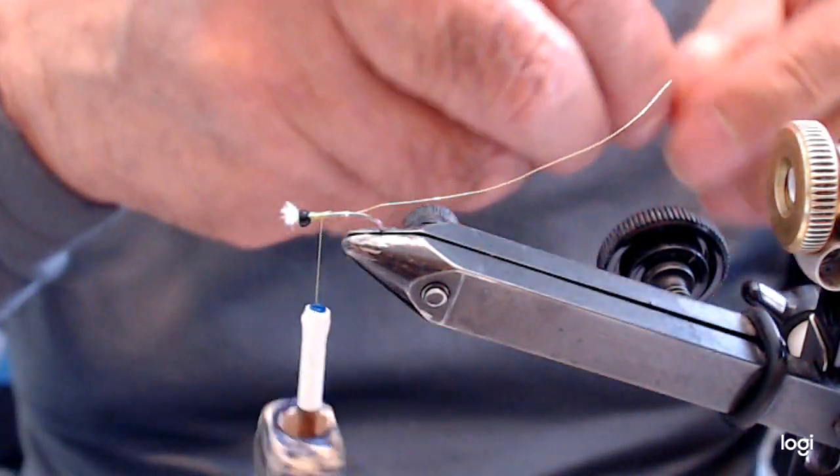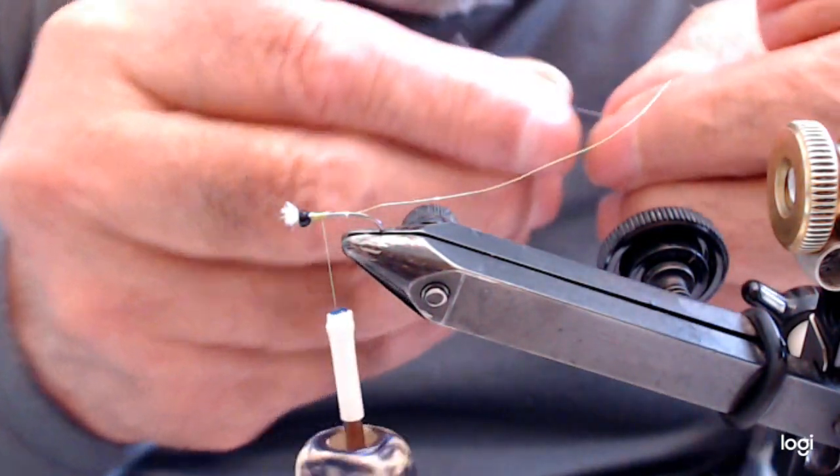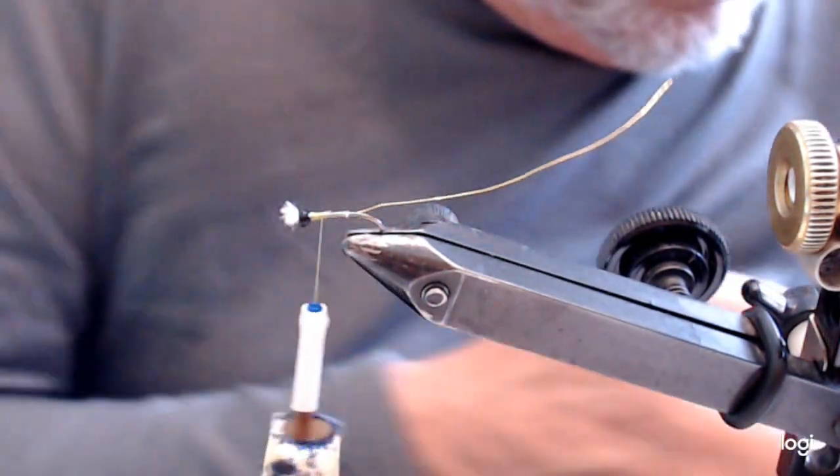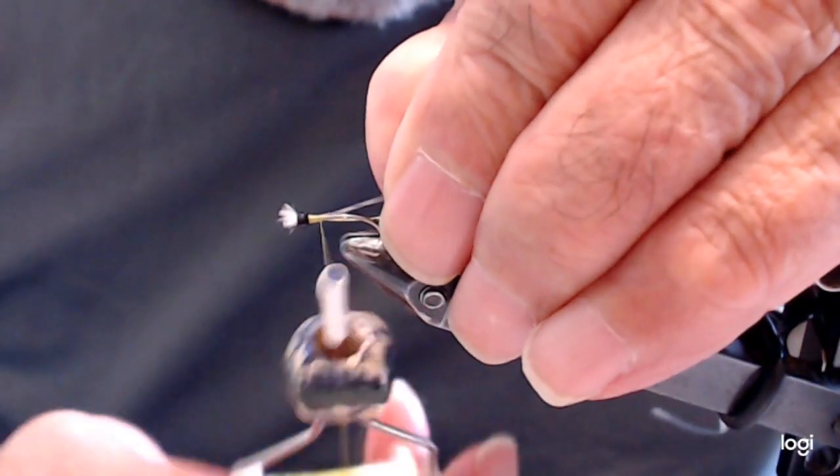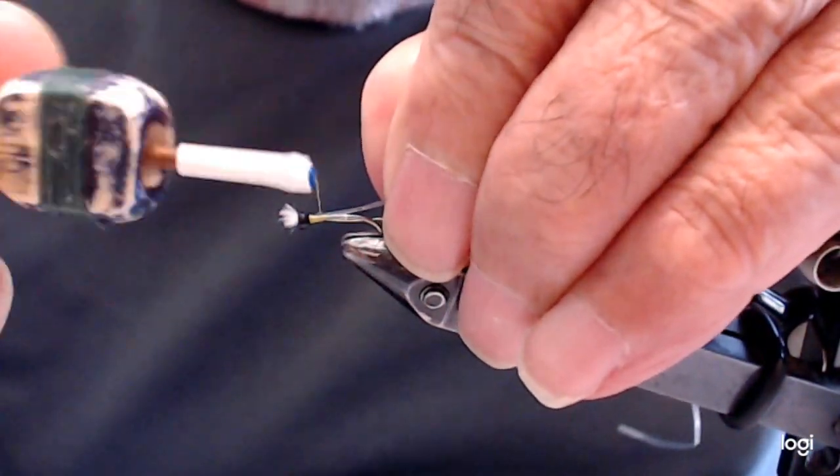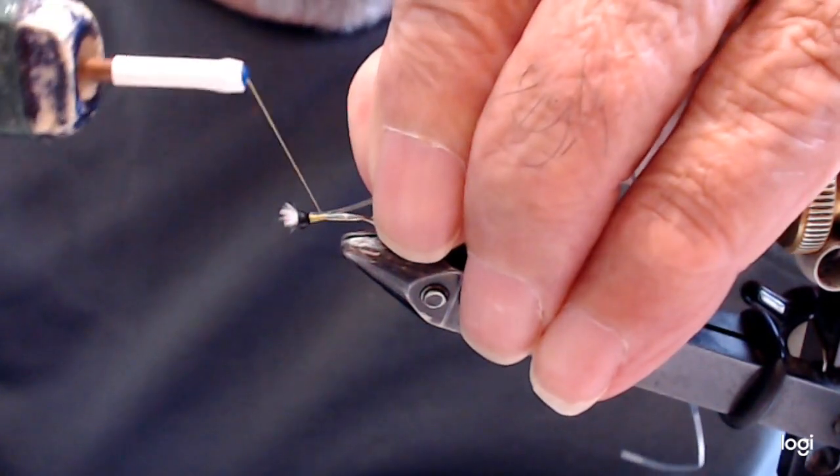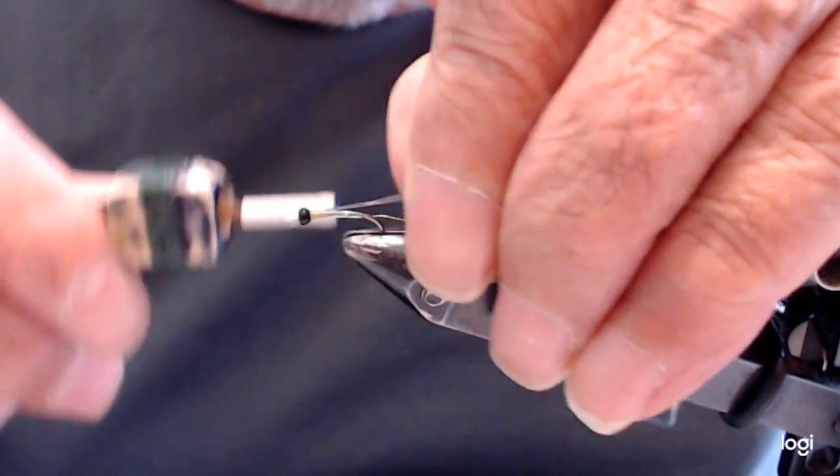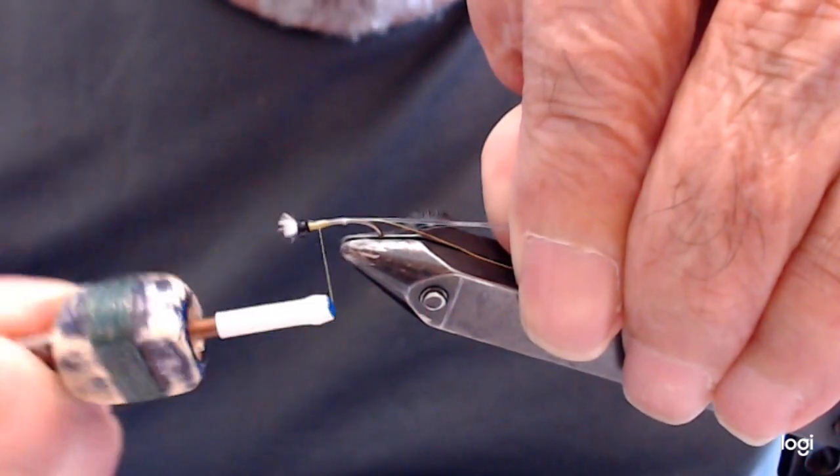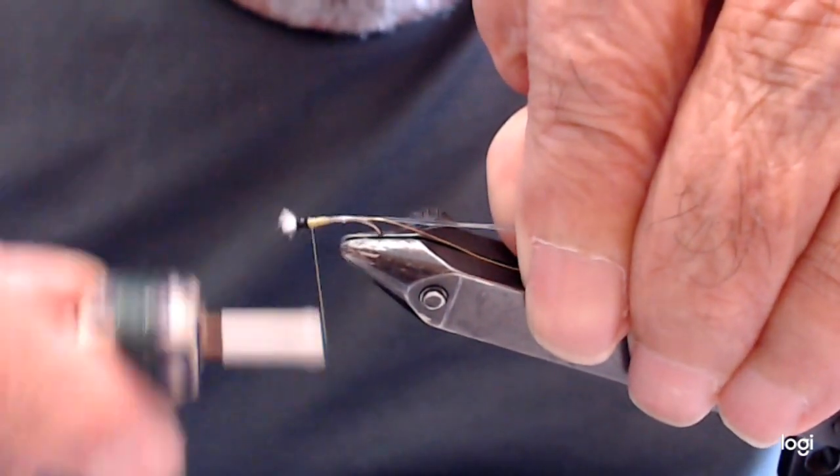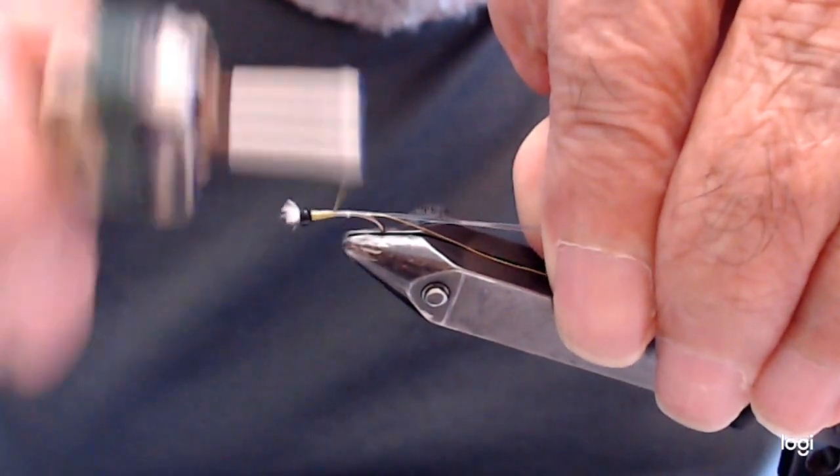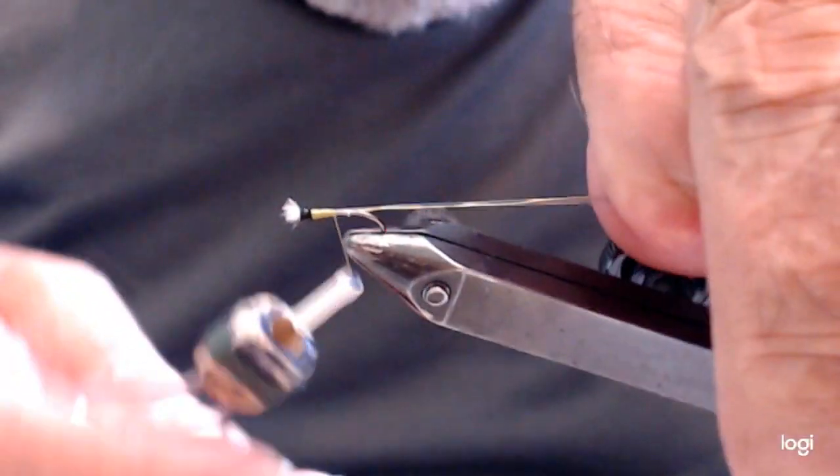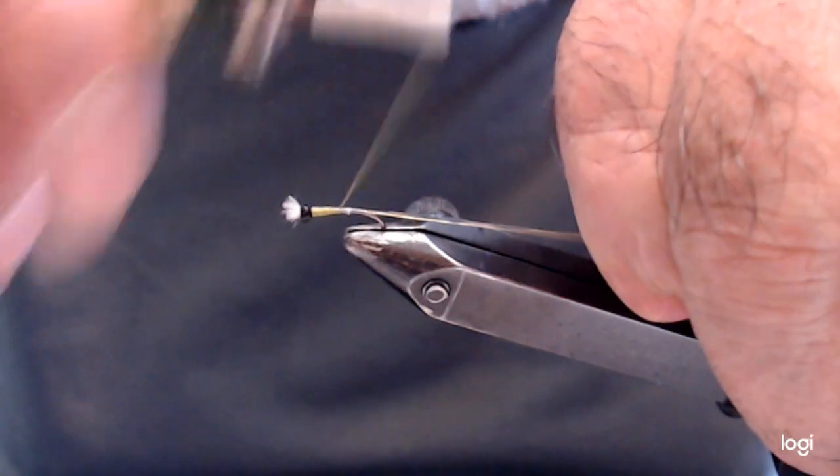You don't want a wide strand. Tie that in. There we go. Now I'm going to run that all the way down to the bend of the hook.